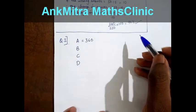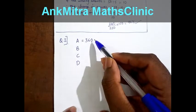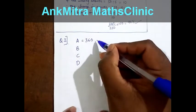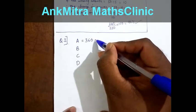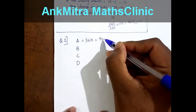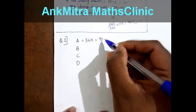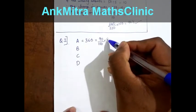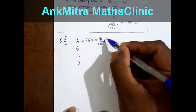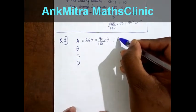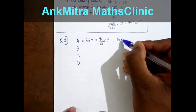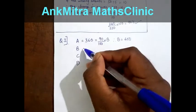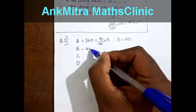Then they have also given that A has scored 10% marks less than B. That means A's marks are actually 90% of B's marks. So we can write it as 90 upon 100 multiplied by B. Simplifying this we get B's marks which comes to 400.